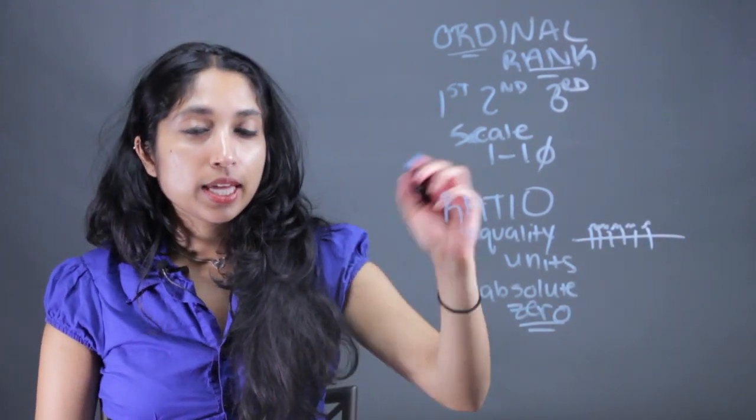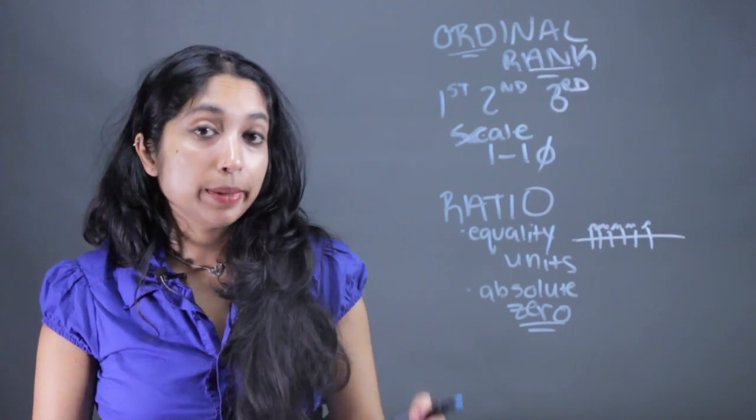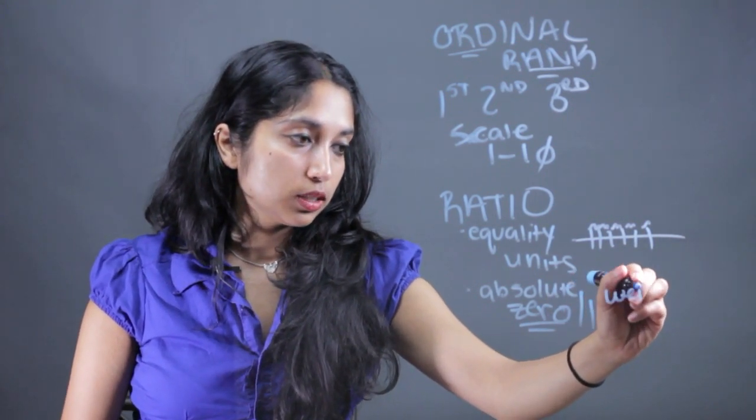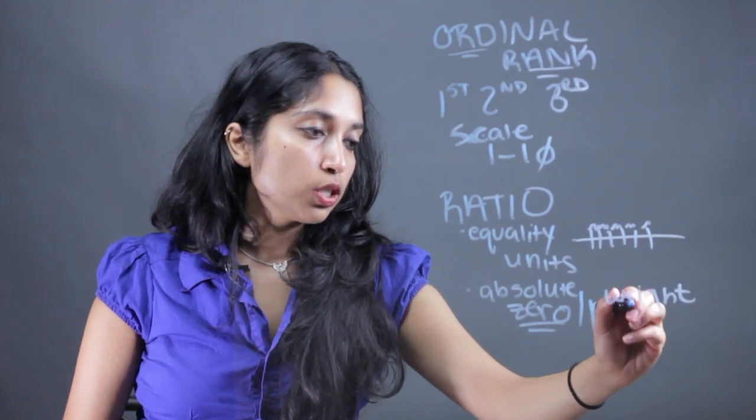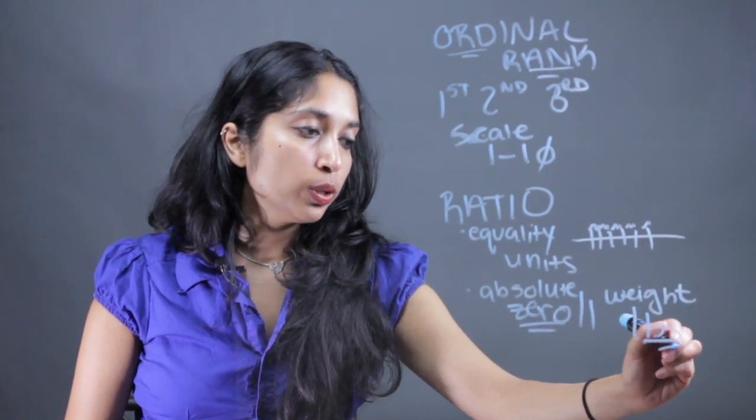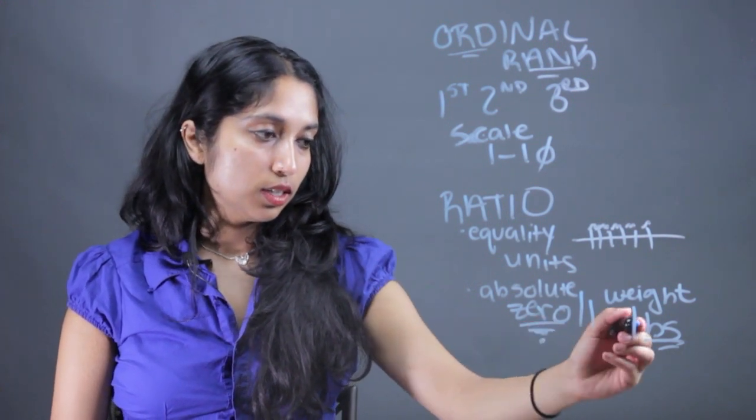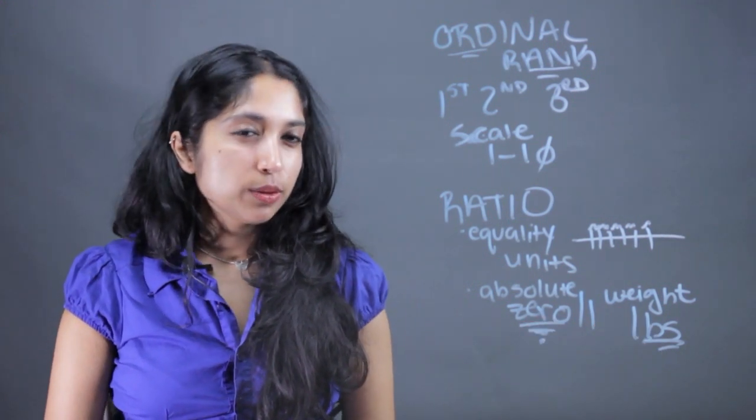Absolute zero means that there's a zero that it cannot be less than. So an example of this measurement would be weight. So how much someone weighs in pounds. I mean, no one weighs negative pounds. There's an absolute zero there. So that's kind of what that means.